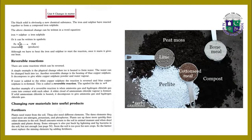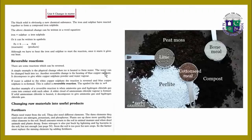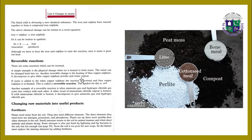The chemical change can be written in a word equation and in the form of symbols as shown. What are reversible reactions? There are some reactions which can be reversed. A simple example is the physical change when ice is heated to form water — the water can be changed back into ice. Another reversible reaction is the heating of blue copper sulfate: it decomposes to give white copper sulfate powder and water vapor.